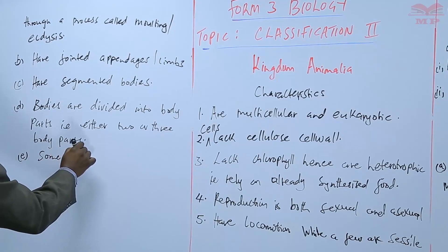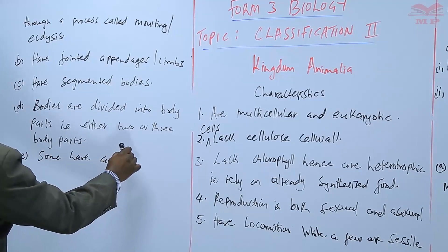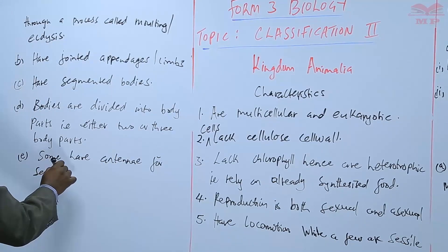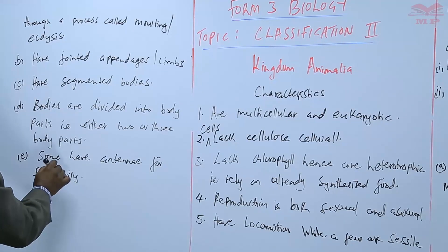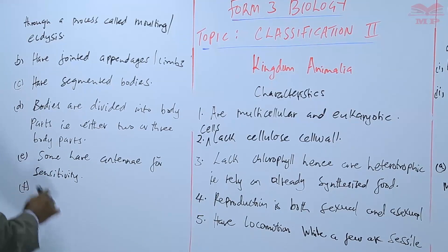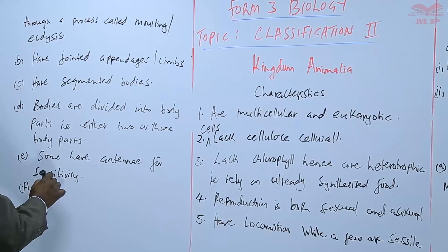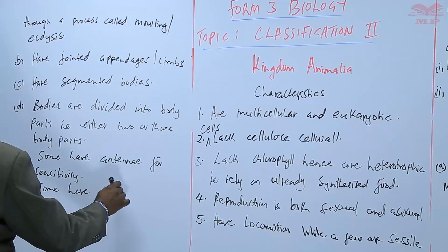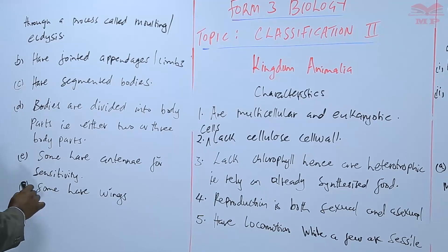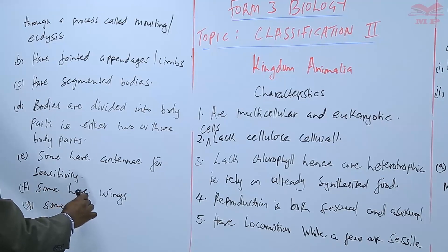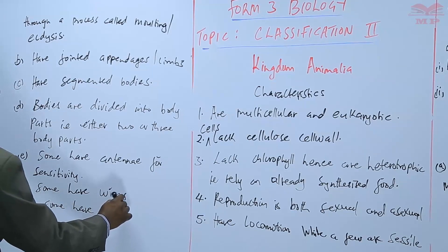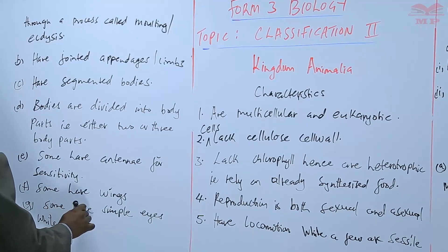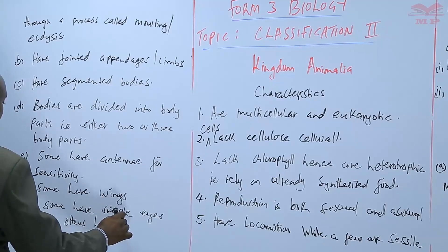Some arthropods have antennae for sensitivity, though not all of them. Some also have wings, again not all of them. Some have simple eyes, while others have compound eyes.